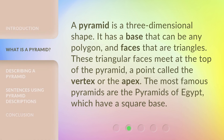A pyramid is a three-dimensional shape. It has a base that can be any polygon, and faces that are triangles. These triangular faces meet at the top of the pyramid, a point called the vertex or the apex. The most famous pyramids are the pyramids of Egypt, which have a square base.